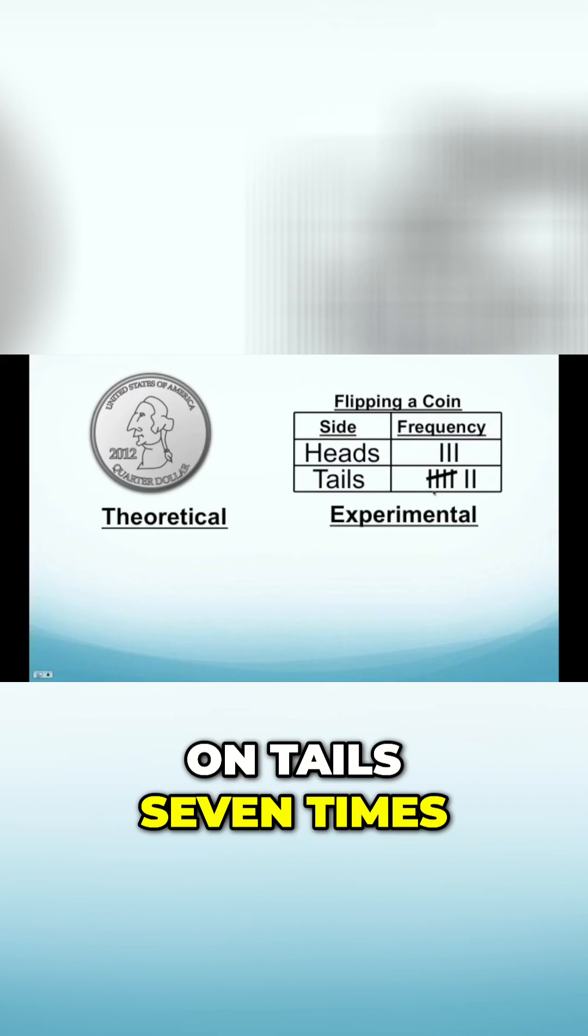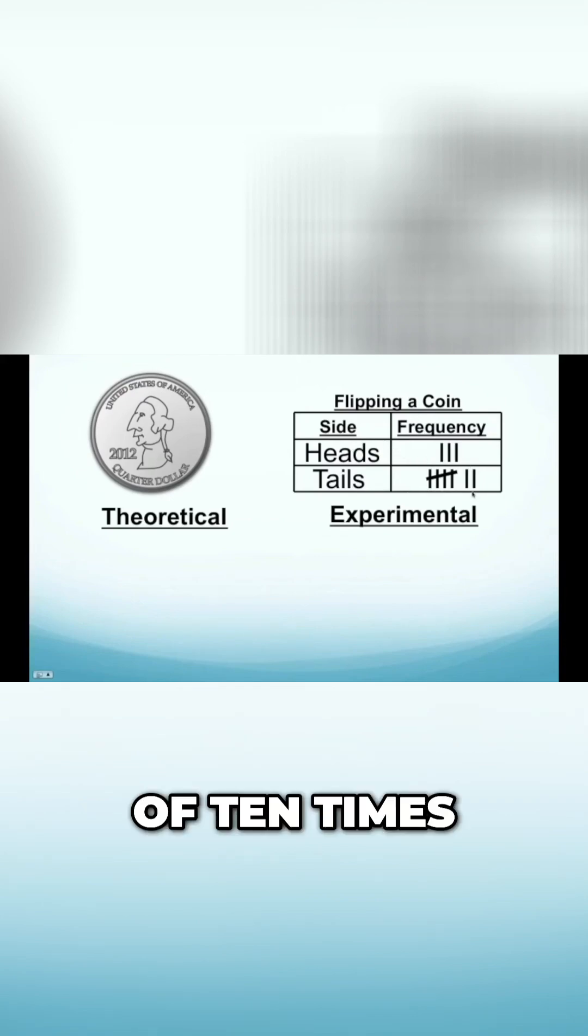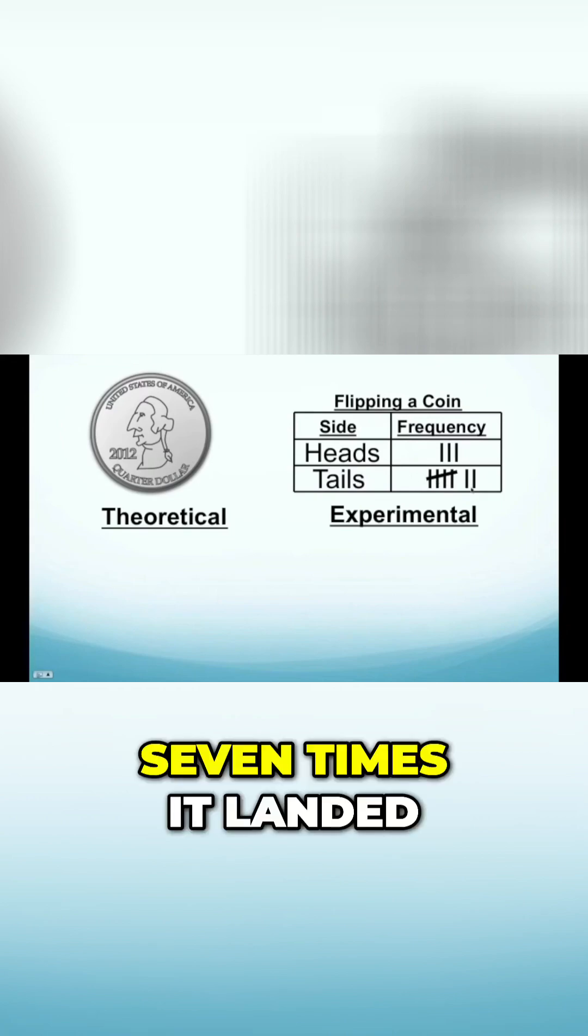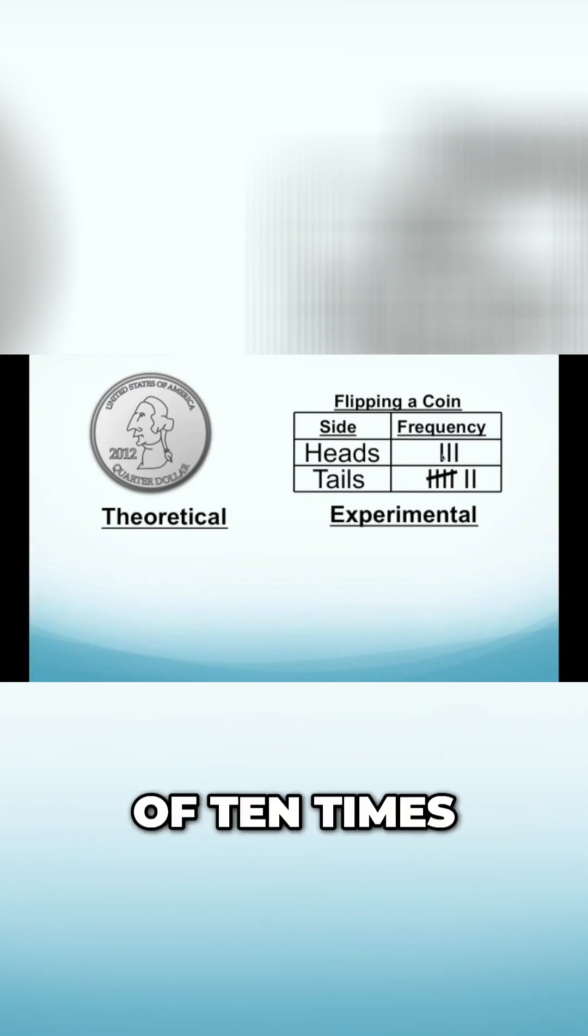So we landed on tails seven times and landed on heads three times. We flipped a coin a total of ten times. Seven times it landed on tails, three times it landed on heads, for a total of ten times.